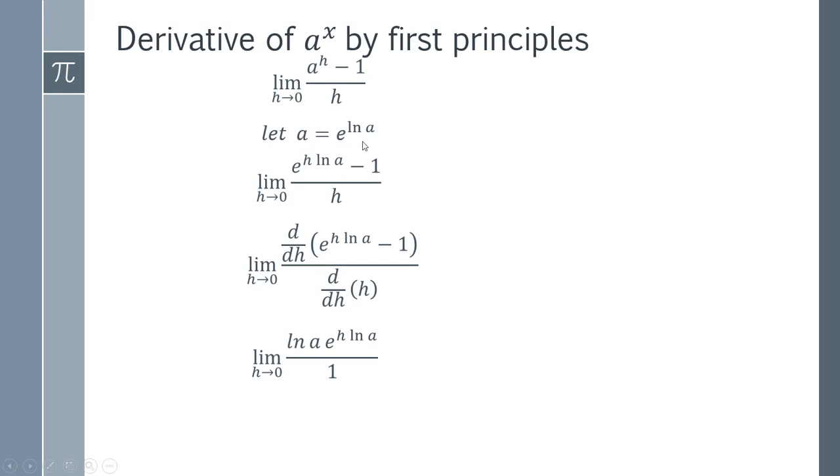We have to remember all the way back that we defined a as e to the ln a. So this is in fact ln a times a to the power h. If we take the limit as h goes to zero, we're going to get a to the power zero, which is simply one, and then we're going to get our answer ln a.